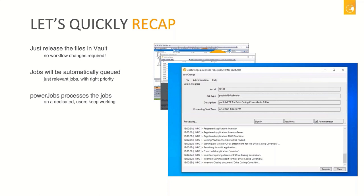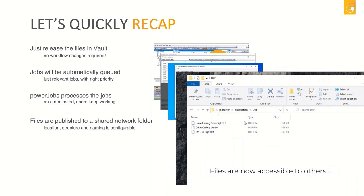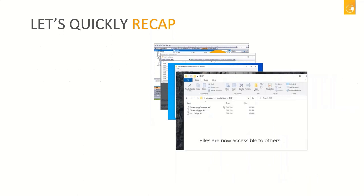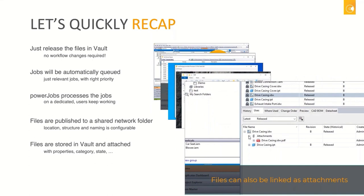I also saw that there was an archive network share — what is that for? Files are published to that network share so that they can be accessed by departments outside of engineering, such as the shop floor or purchasing department, without the need to log into Vault. But at the end I also saw that the files were stored back into Vault — isn't that redundant? It isn't, because a lot of customers use the Vault thin client, and by having the files published back into Vault they can be accessed in the thin client.